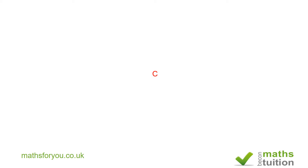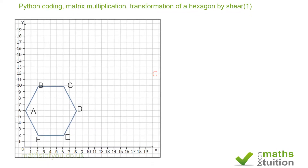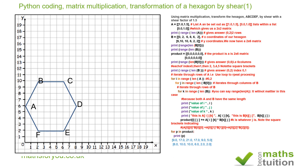Hello and welcome to this exercise on Python programming — by a beginner, for beginners. In this instance I'm looking at matrix multiplication, using it to transform a hexagon by shear with a shear factor of 1.5. From the outset, you can do all of that in about five lines using a package called NumPy — but that's for another session.